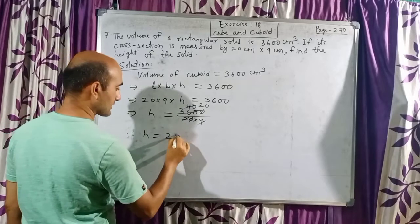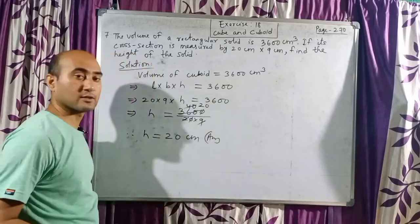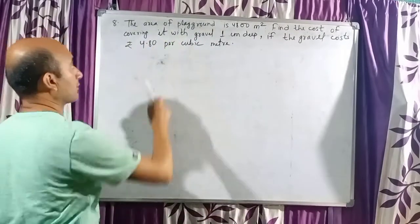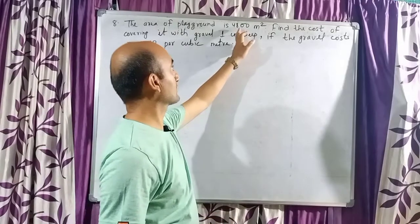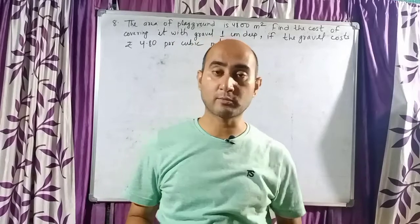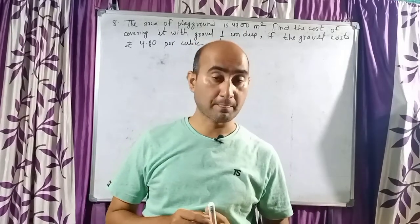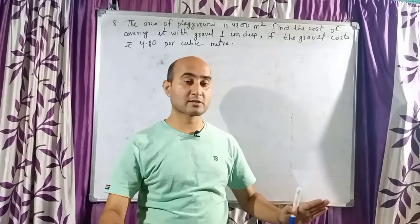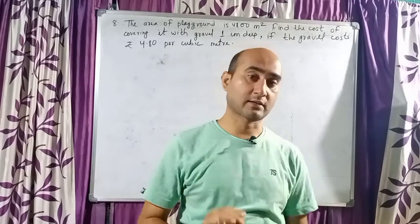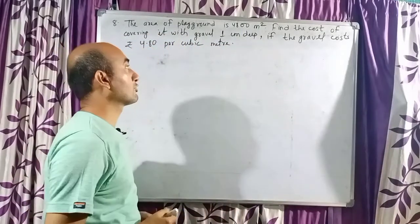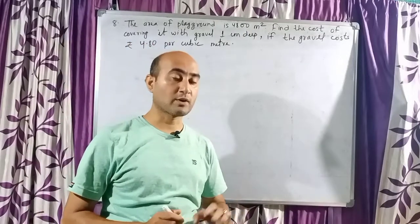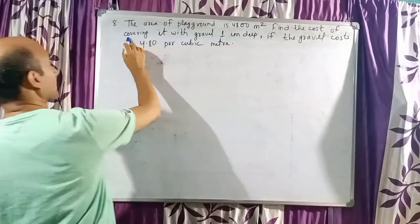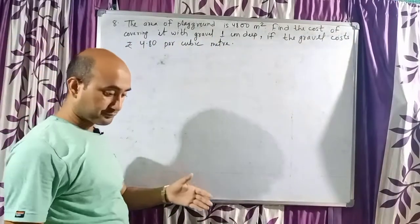Our height h will be 20 centimeter. This is our answer. Let us discuss one more question. Question number 8: the area of playground is 4800 meter square. When I say area of playground, remember I am speaking about a rectangle, not a cuboid, because when you see the playground we only measure length and breadth — there is nothing to measure about the height. So the playground is a rectangle. Its area is 4800 meter square, and area of rectangle is length into breadth. Find the cost of covering it with gravel.